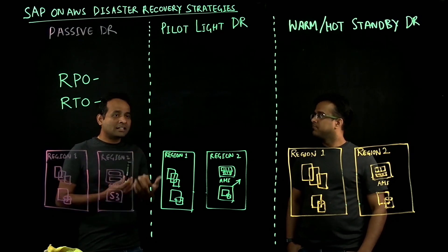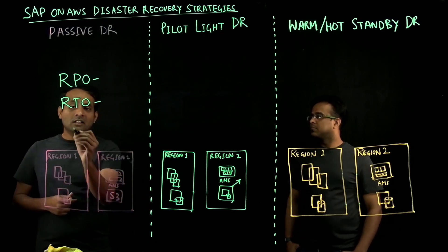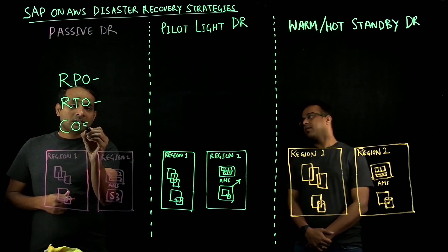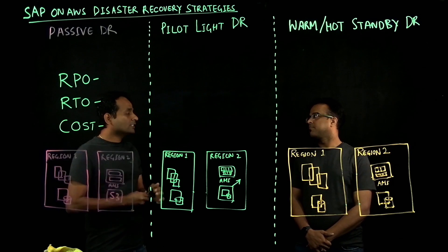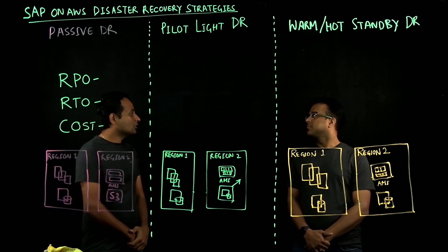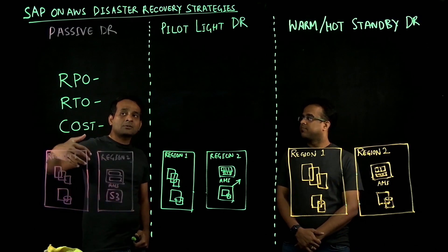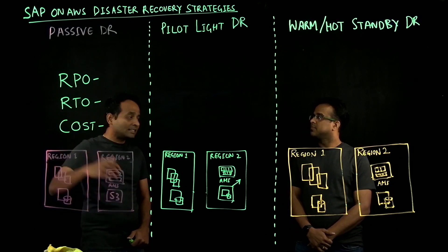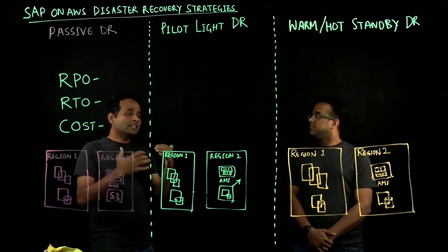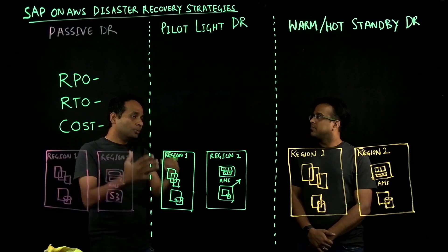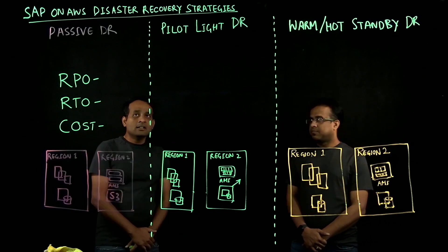So that you can always work backwards from your customer requirements, the key design principle here is that we at AWS always start by asking questions to our customers to understand their business continuity requirements, which start with recovery point objective and recovery time objective. Once we identify them, it will be easy to identify the pattern that works for the customer.